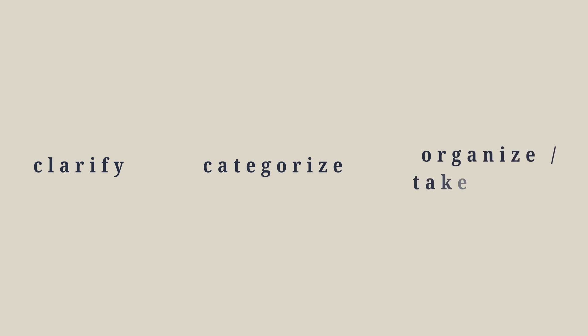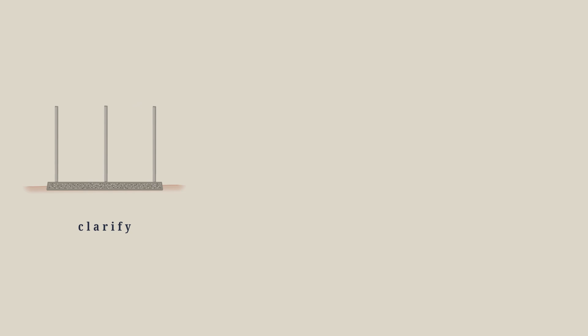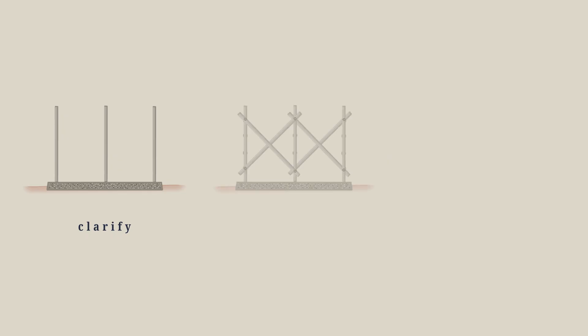The Getting Things Done book provided a workflow to further break down this process into three stages: clarify, categorize, organize, or take action. First, we start with clarify, which is like laying down the base plate for our scaffolding. The goal is to get a clear picture of what each task or piece of information really means, making sure that every decision aligns with our broader goals. Next is categorize, which acts as the frame, giving the scaffolding its shape and stability. Here, we ask ourselves questions like: is this actionable, what's the next step, and how much time will this step take?